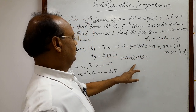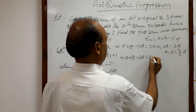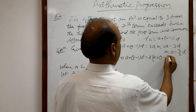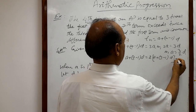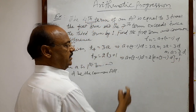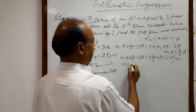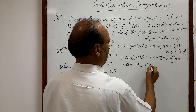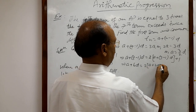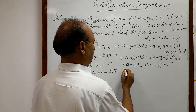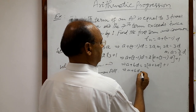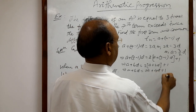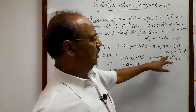Now from the second condition, t7 = a + (7 − 1)d = a + 6d, using the formula tn = a + (n − 1)d. This equals 2 times t3, which is 2(a + (3 − 1)d) + 1 = 2(a + 2d) + 1. So a + 6d = 2a + 4d + 1.